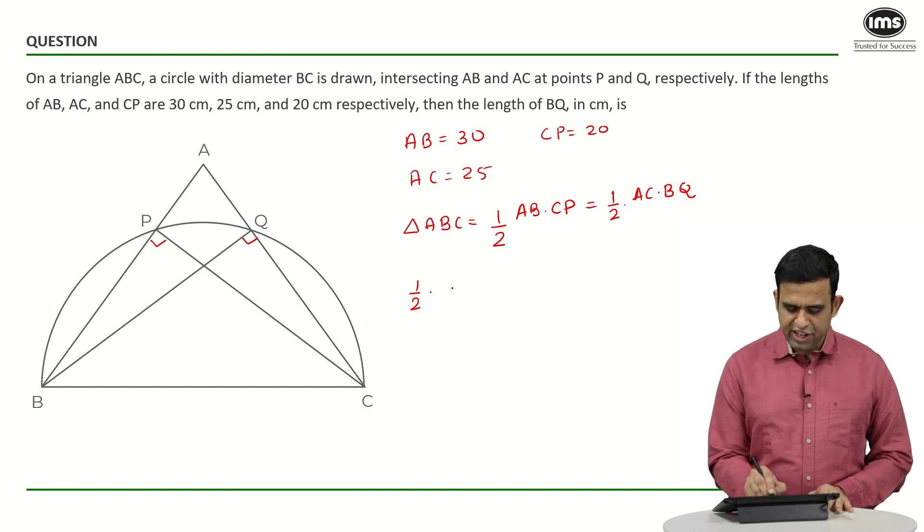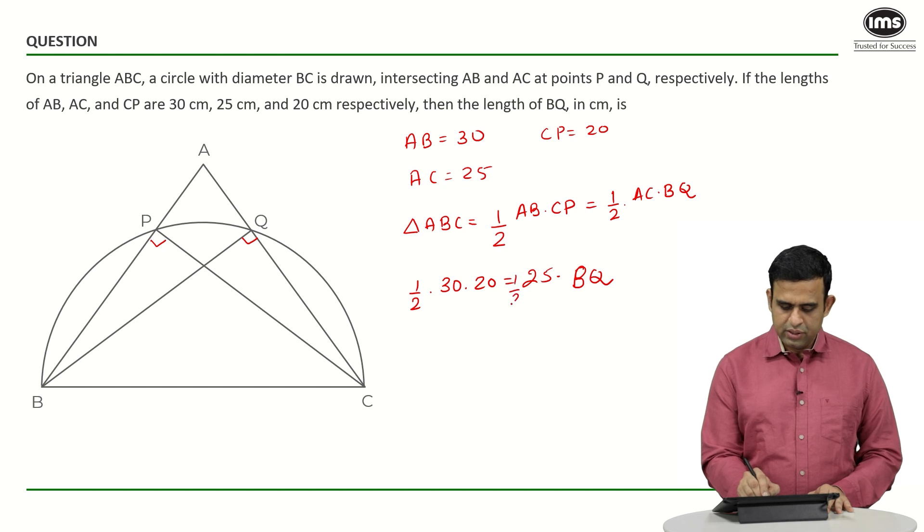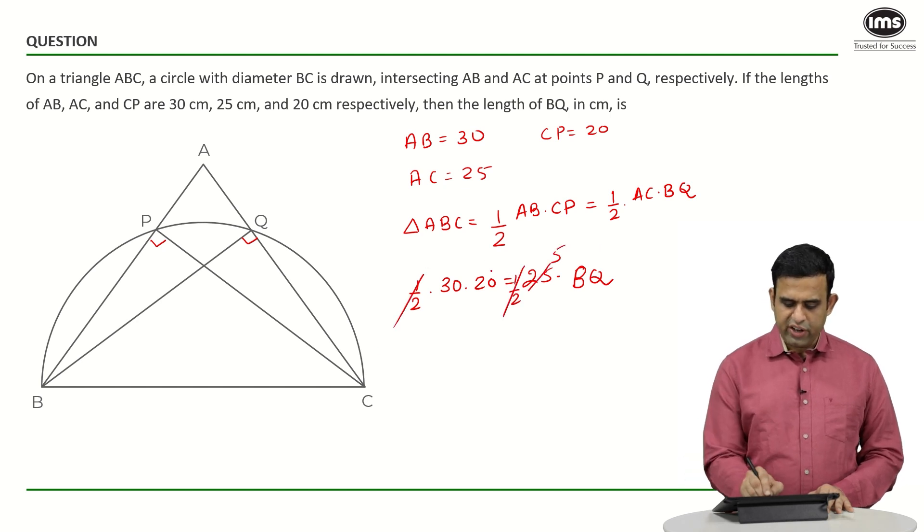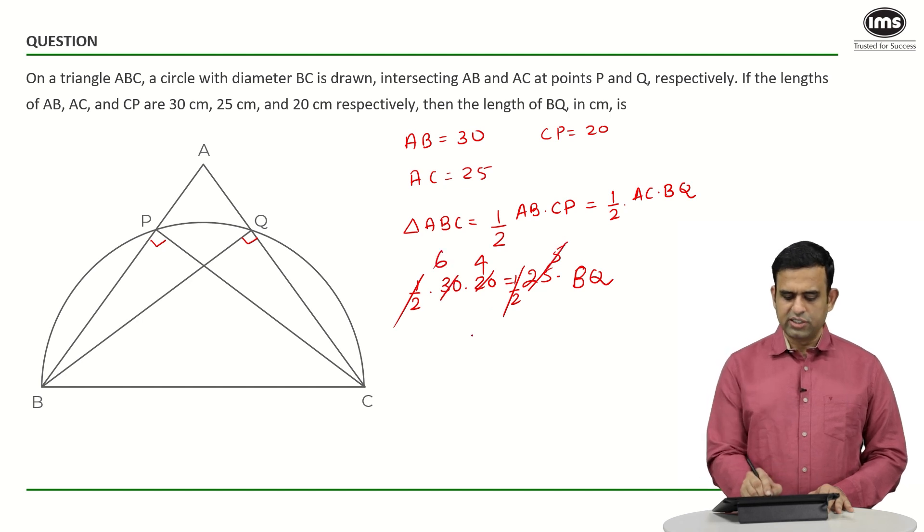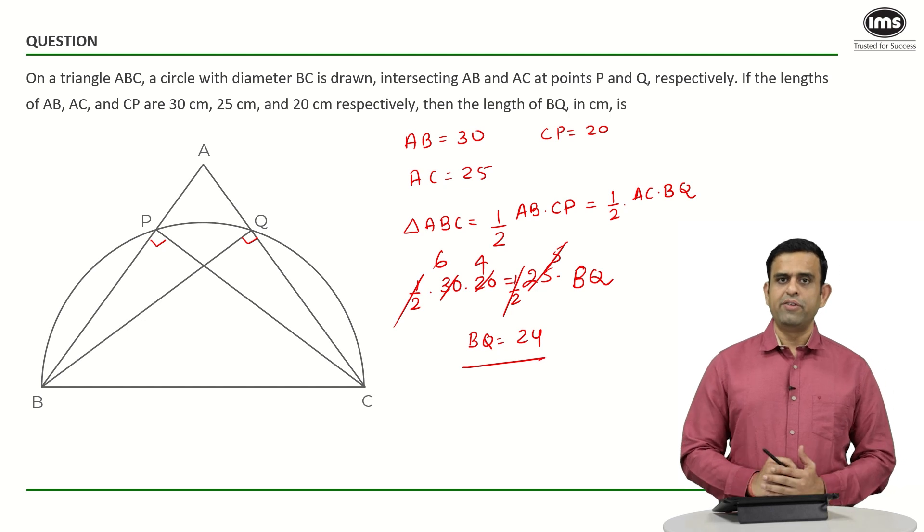One gets half AB is 30, CP is 20, AC is 25, and the objective is to find out the length of BQ. So half goes out, then I can say 30 times 20 equals 25 times BQ. Hence the length of BQ comes out to be 24 centimeters.